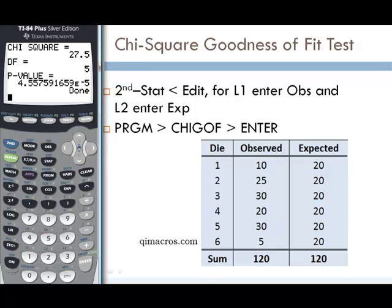The program tells us that for this data set, our chi-square value is 27.5, our degrees of freedom is 5 — which makes sense since we have 6 data values — and our p-value is 4.56 times 10 to the negative 5th, which is an extremely small p-value. In that case, we would reject the null hypothesis and accept the alternative hypothesis. We only have to write the program once, and then we can use it over and over every single time we want to do the chi-square goodness of fit test.